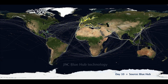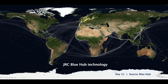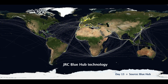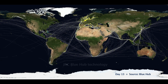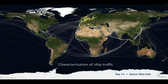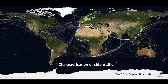Using its BlueHub technology, the JRC produced this animation covering a period of one month. The ship positions are refreshed every six hours and reconstructed every hour. It is the first time that LRIT data are being used to characterise global ship traffic.